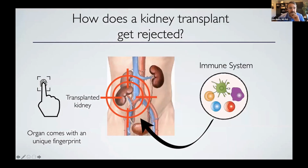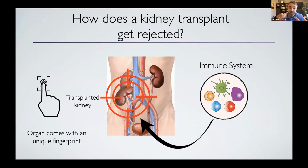To start, I always like the idea of thinking through how does a kidney transplant get rejected? What's unique about a kidney transplant — and whatever organ transplant that we transplant — is that it comes with a unique fingerprint, something that's different between individuals. And that's what allows the immune system to recognize something as being foreign and drive the alloimmune response.